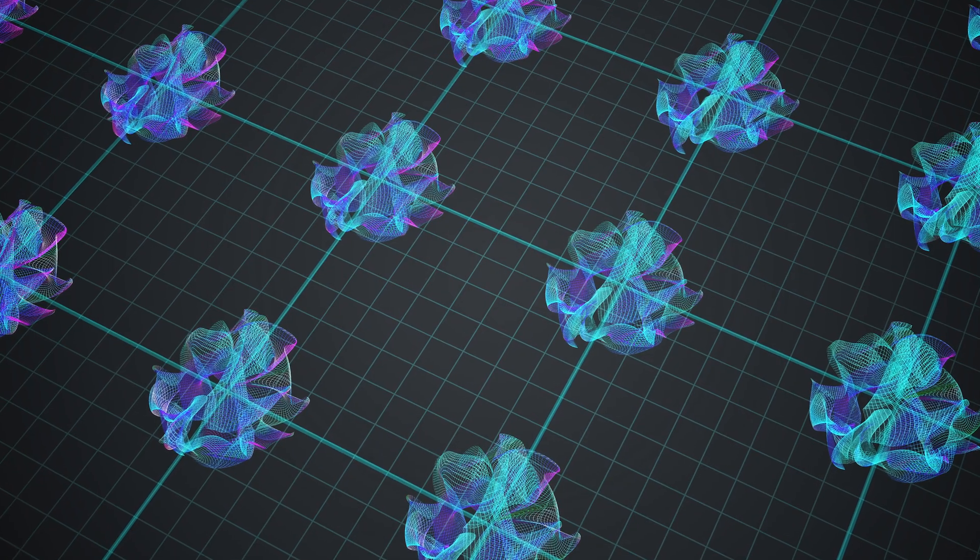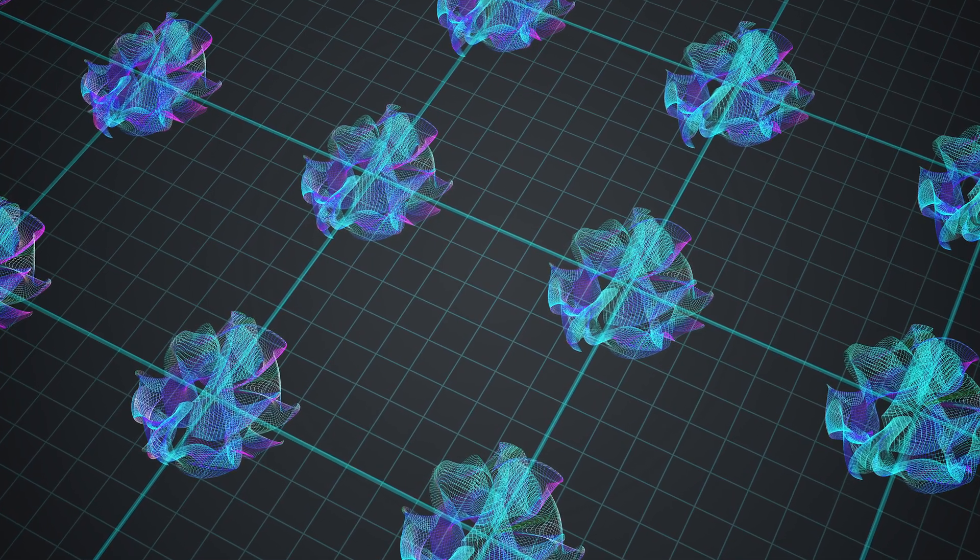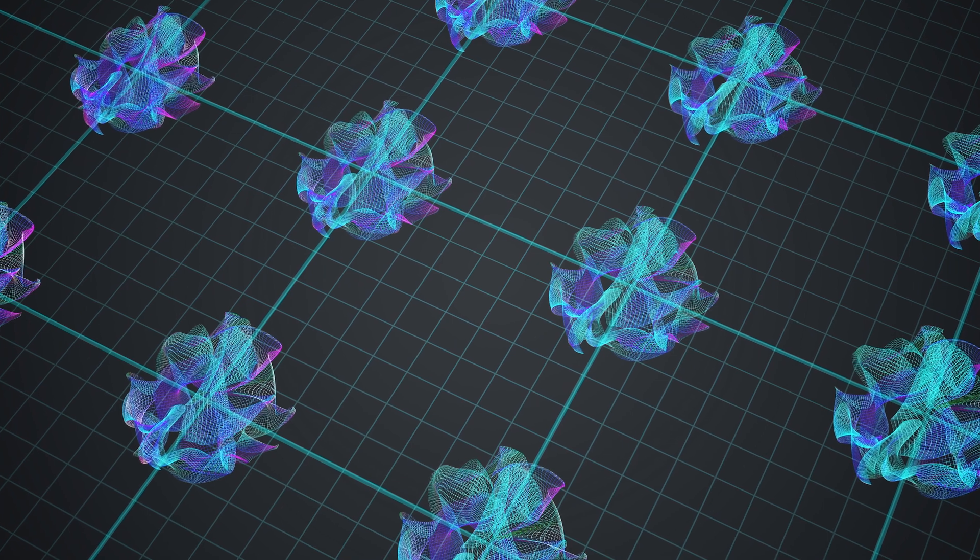If string theory is true, those are only the dimensions we can observe. There are really seven other directions in which you could move. Well, not you. Even the atoms that make you up are way too large to move into these extra dimensions. But the strings that make up reality are free to vibrate around in these unknowable dimensions.